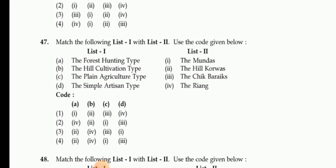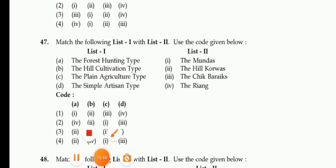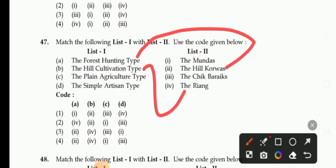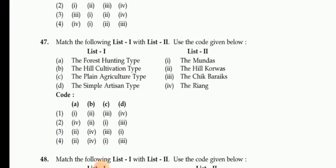Next match the following tribal types: Forest hunting type — Hill Corvars. Hill cultivation type — Riyang. Plain agricultural tribe — Mundas. Simple artisan — Barai.